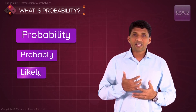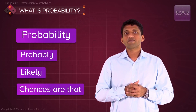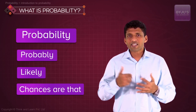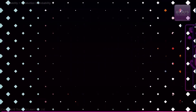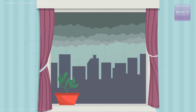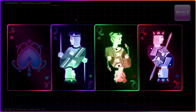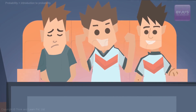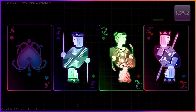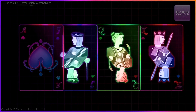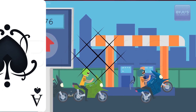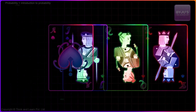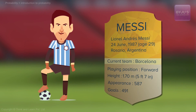...probably, likely, chances are. For example: 'It'll probably rain today,' 'Germany has a good chance of winning the World Cup,' 'Chances are high that the petrol prices are going up,' 'There's a very good chance that Messi is going to score in the first half itself.'